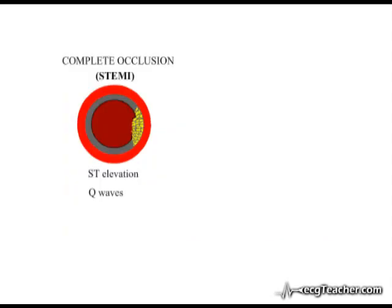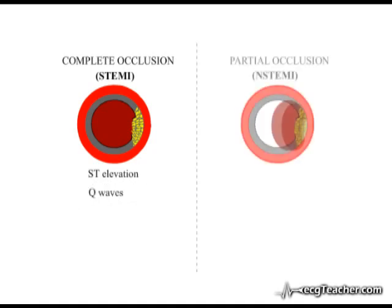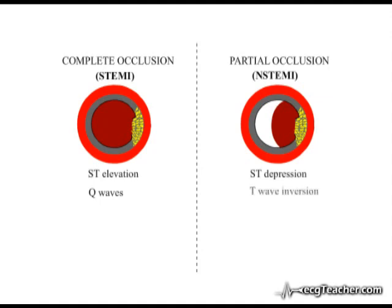In summary, in ST elevation MI, untreated complete arterial occlusion may progress to infarction of the full thickness of the affected myocardial wall, possibly associated with development of pathological Q waves in the leads overlying the dead muscle. In contrast, partial occlusion may progress to localized infarction, the process tending to focus on the subendocardium. This situation is characterized by depression of the ST segment and/or T wave inversion, and Q waves do not generally develop.